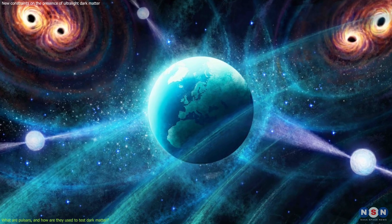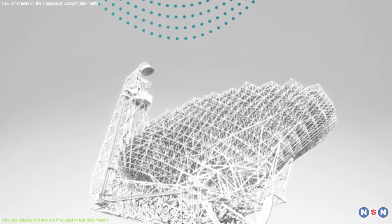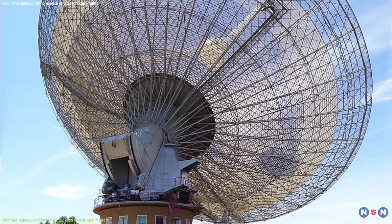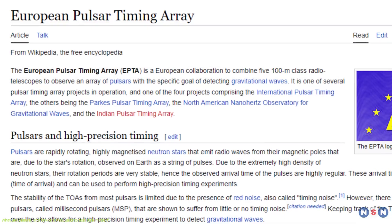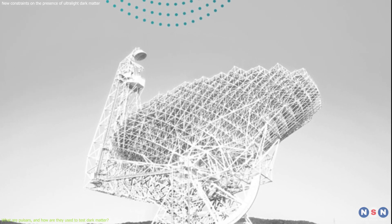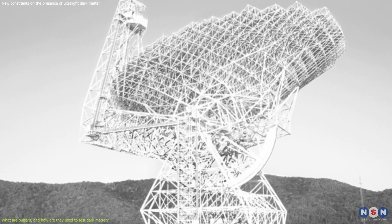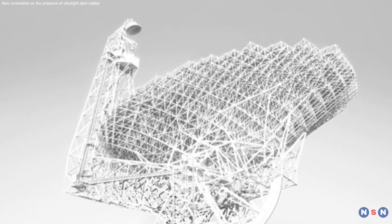There are several pulsar timing arrays around the world, such as the North American Nanohertz Observatory for Gravitational Waves, the Parkes Pulsar Timing Array, and the European Pulsar Timing Array. Each of these arrays has its own advantages and disadvantages, such as the number of pulsars, the sensitivity of the telescopes, and the duration of the observations.